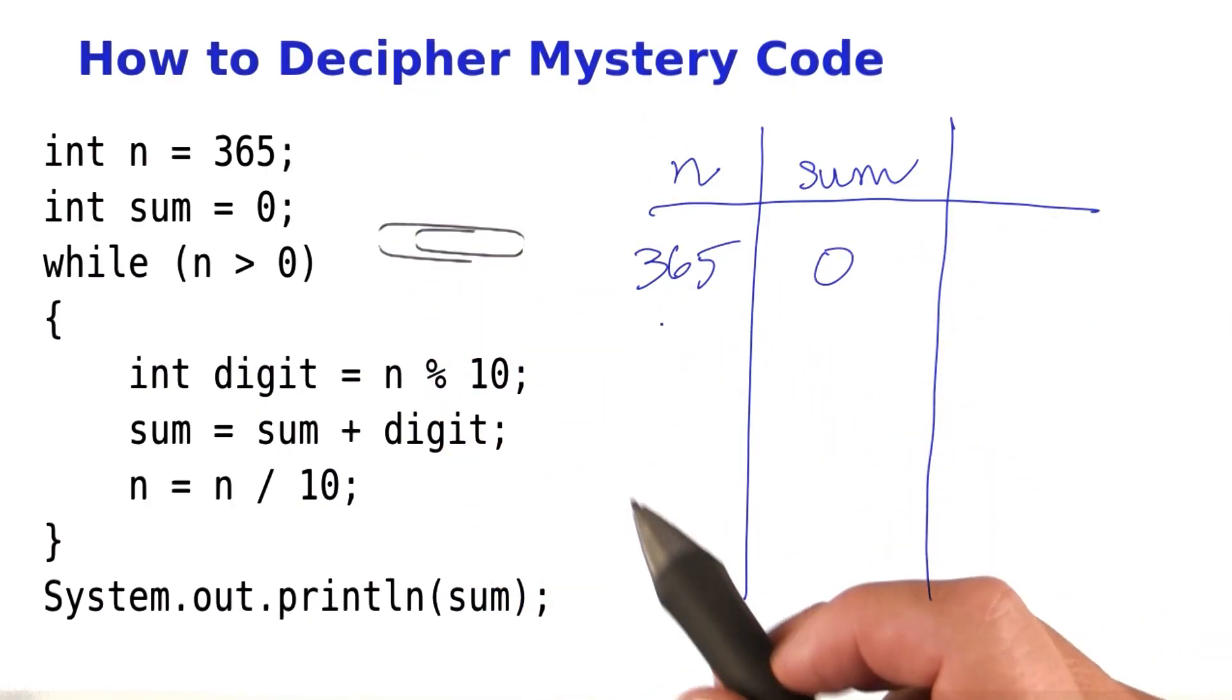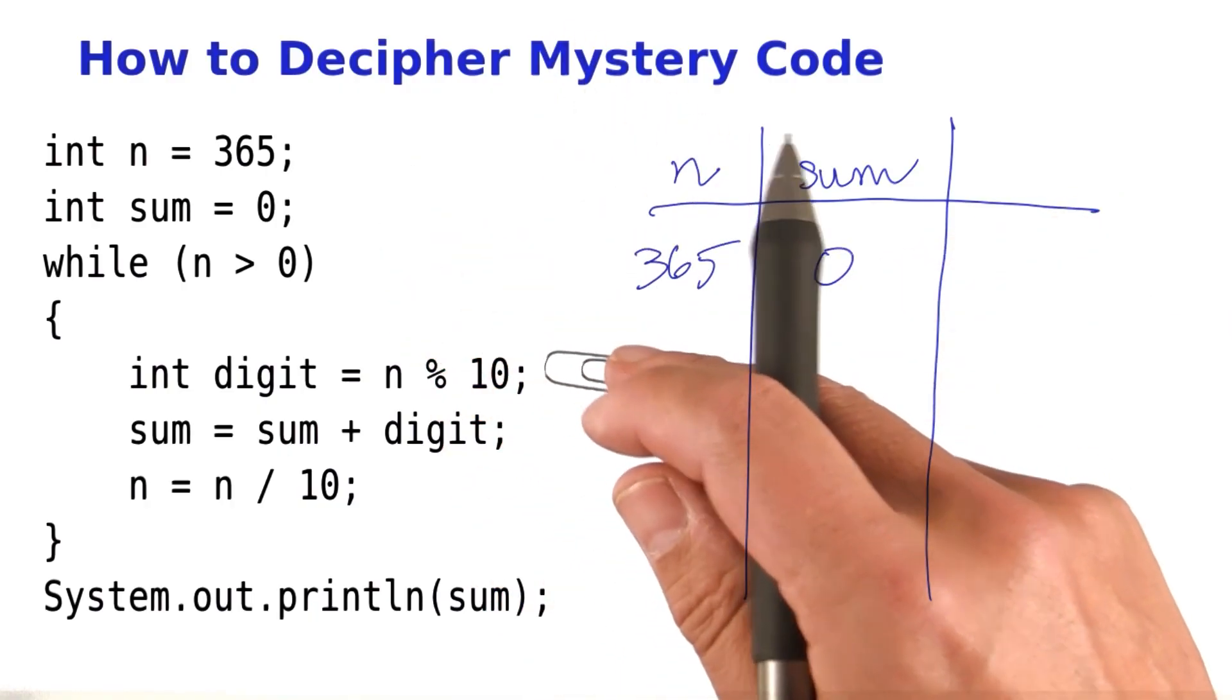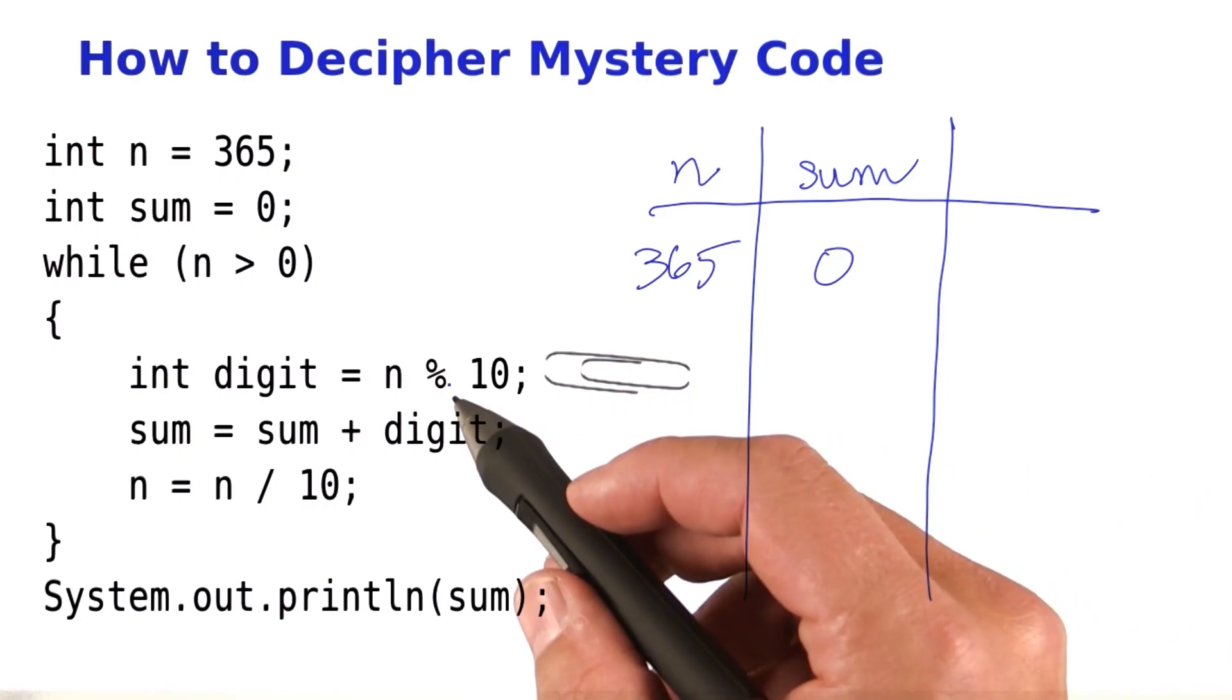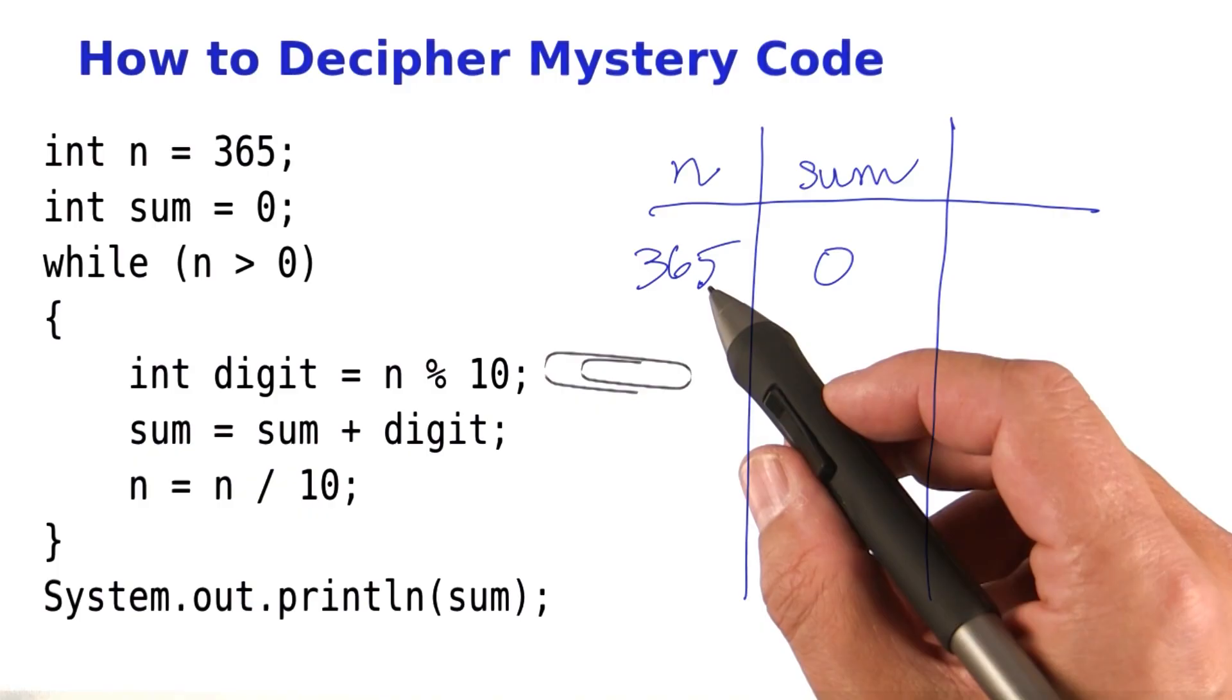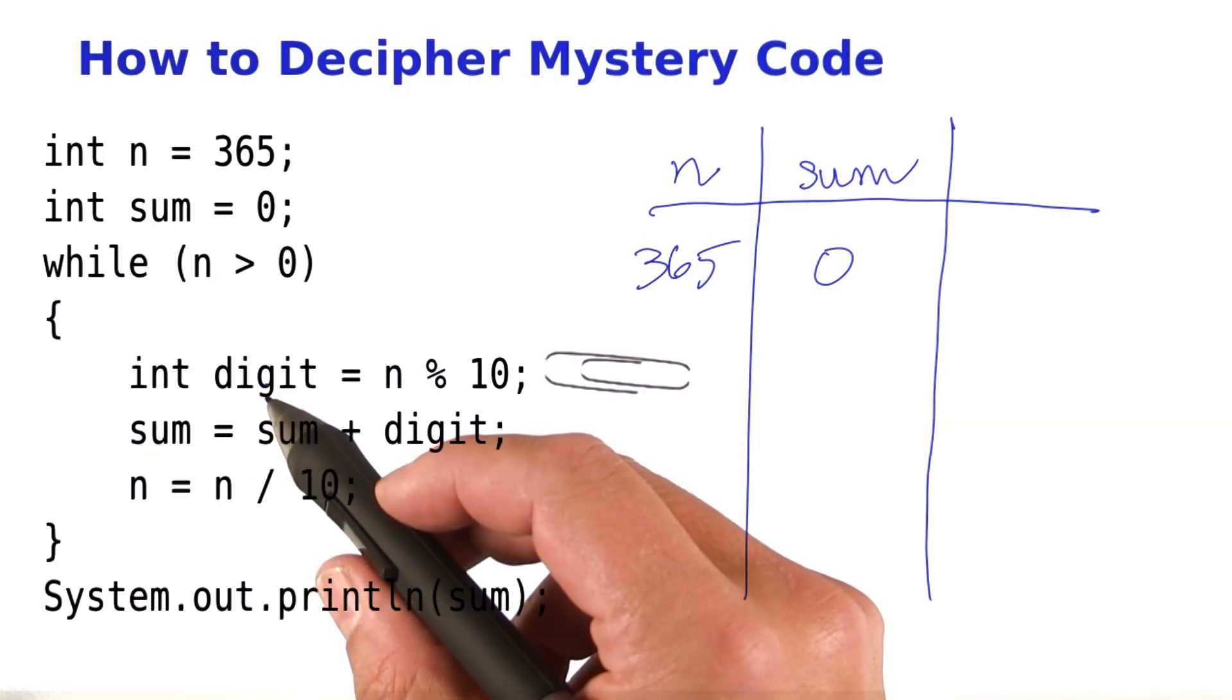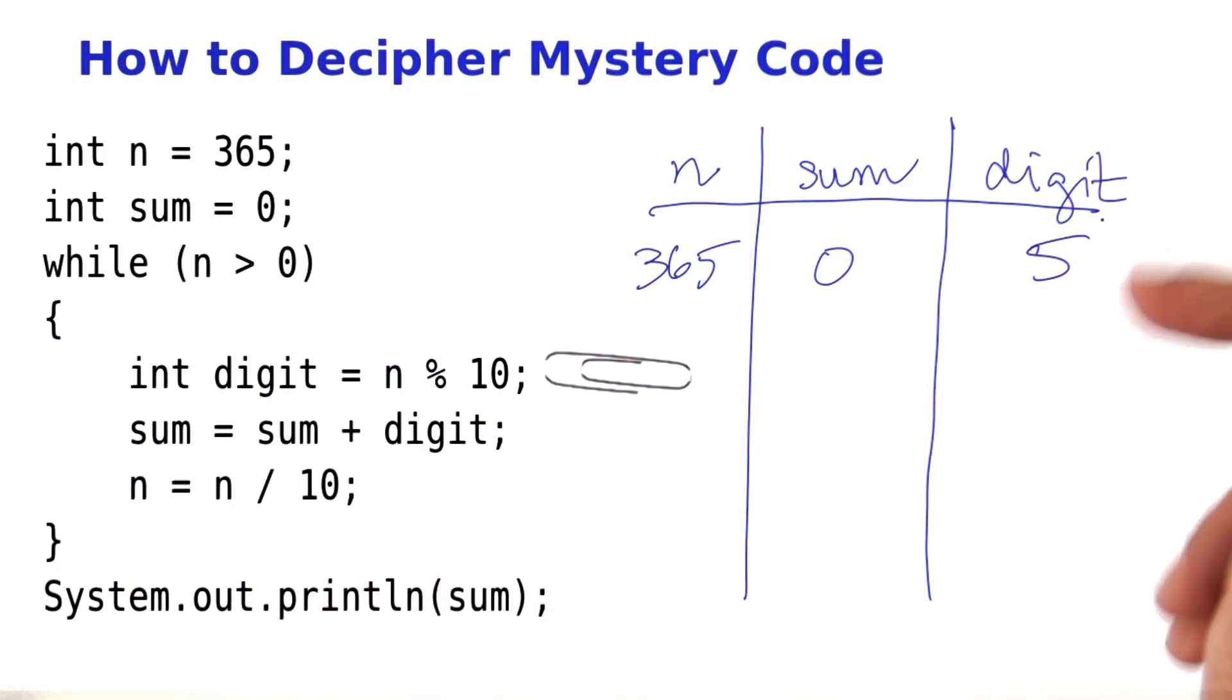Now we enter the loop. Is n greater than 0? It sure is. We get to this statement. Now we need to compute n modulo 10. That's the last digit of n. That would be 5. And now we have a new variable. We record it. We put in the 5. Moving on. Sum is sum plus digit.